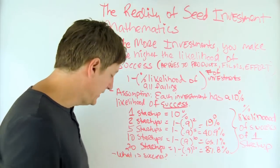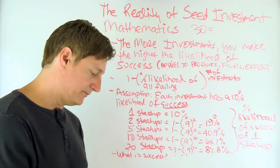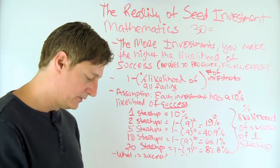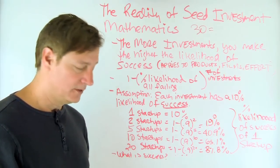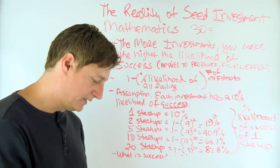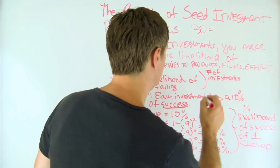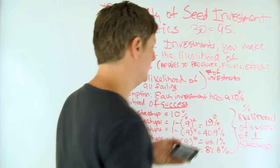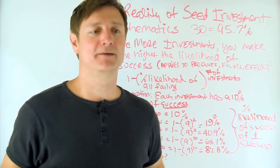But let's do one together right now. So let's say you invested into 30. So I'm going to get my formula out. So I'm going to put in 0.9 to the power of 30, 30 investments, whatever they are, whether they're startups or products or films. And then I'm going to subtract that from one minus that. And so now the likelihood of having at least one startup become a success is 95.7%. This is all based on statistics. I'm not making this up.